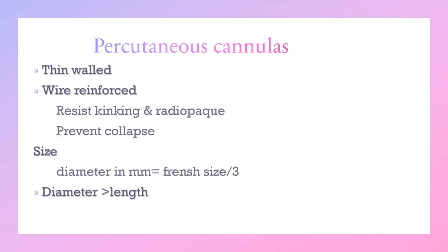Cannulas are an important part in determining ECMO flow in the circuit. They have the following characteristics: thin-walled with maximum internal diameter and the least external diameter; presence of wire reinforcement, which helps them resist kinking during insertion and also makes them radio-opaque so we can follow the insertion site by X-ray; and they prevent collapse at the venous side, which can generate minus 100 mmHg by the pump.